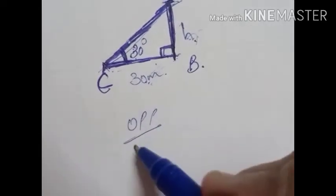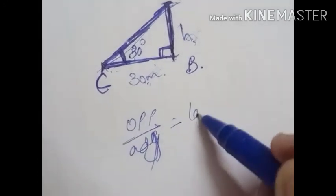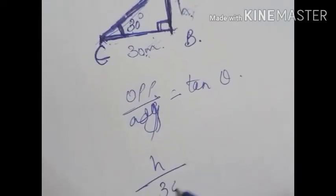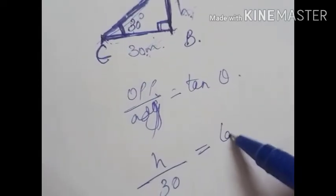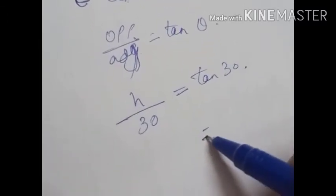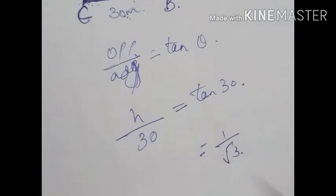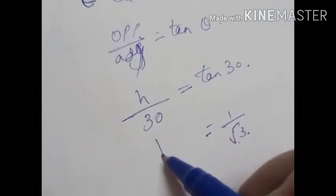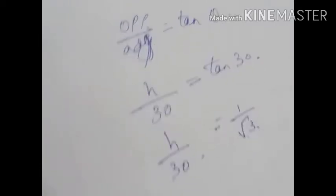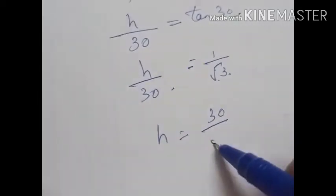Opposite by adjacent — what is the relation for opposite by adjacent? It is tan theta. So opposite is h, adjacent is 30. This is equal to tan 30. The value of tan 30 is 1 by root 3. So h by 30 equals 1 by root 3, which gives h equal to 30 by root 3.